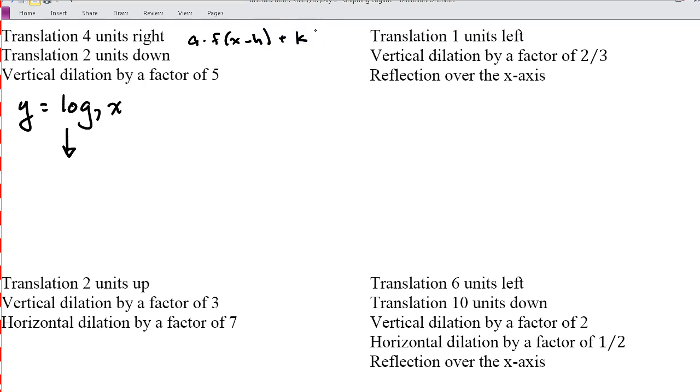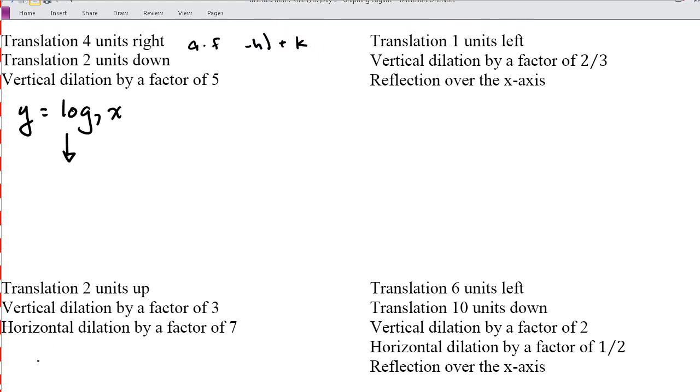So I've got my a·f(bx - h) + k. Let's go ahead and sneak the b in there, we don't want to forget that. Translate four units to the right - that's going to be my h. Translate two units down - that's going to be my k. And a vertical dilation factor of five - that's going to be my a.